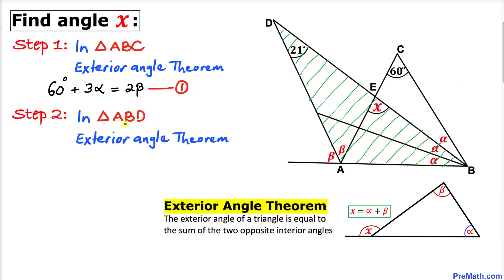In the next step, let's focus on triangle ABD. We can see that angle beta is our exterior angle and that is equal to the sum of the two opposite interior angles: 2 alpha and 21 degrees. So we can write equation 2: 21 degrees plus 2 alpha equals beta.